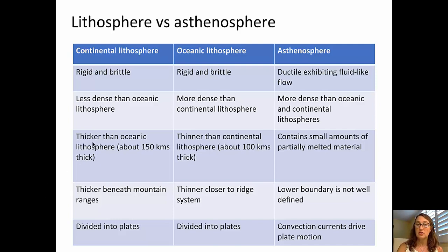The oceanic lithosphere is also rigid and brittle, more dense than the continental lithosphere, thinner than the continental lithosphere, and it thins close to the mid-ocean ridge system.